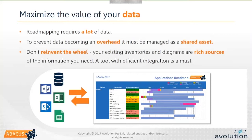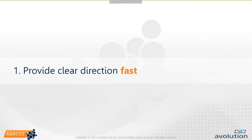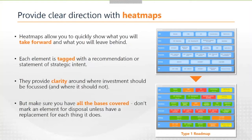Now let's get on to the first success factor: providing clear direction fast. In my personal experience, often when you're starting out road mapping, people request a road map because there's a strategy gap — no one knows what the strategy is for these applications, for example. It might be there's no technical strategy. The first thing we need to do is provide some kind of clear line of travel or clear strategic direction. The best way to do that is with a heat map — that's what Tim alluded to as a type 1 road map.